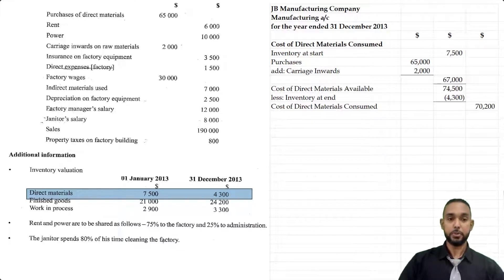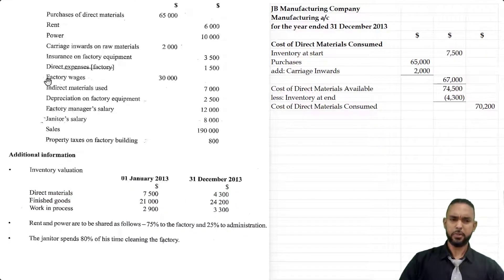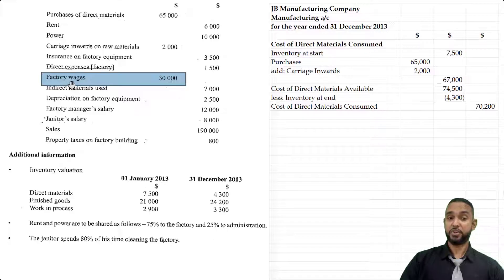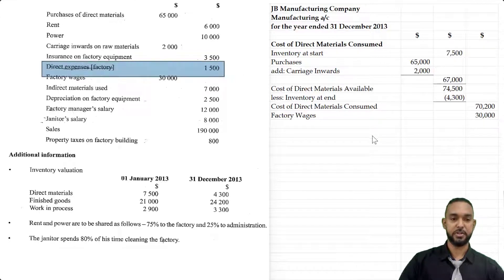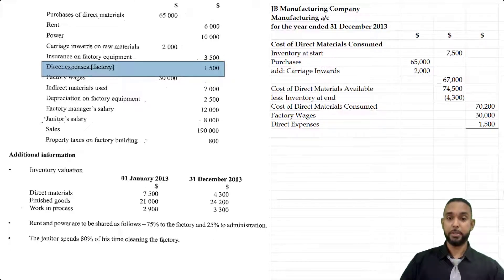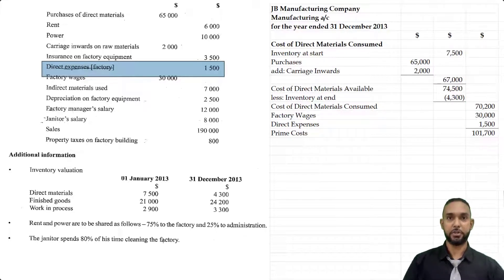We also need direct labor. Quite often they don't state direct labor outright, but they give us factory wages — factory wages are usually considered direct labor. If they give you factory salaries, note that salaries are not direct. Factory wages here are 30,000. Just above factory wages, we also see direct expenses of 1,500. Those three items — direct materials consumed, direct labor, and direct expenses — sum to give us what's called prime cost, because those are the primary costs of production: materials, labor, and direct expenses.